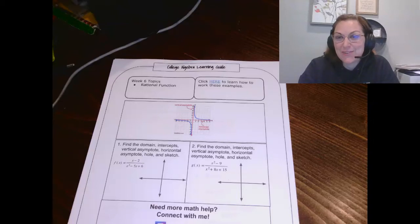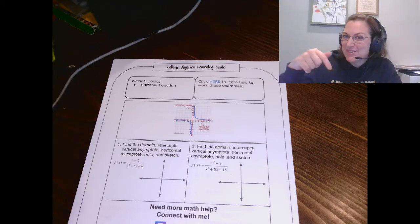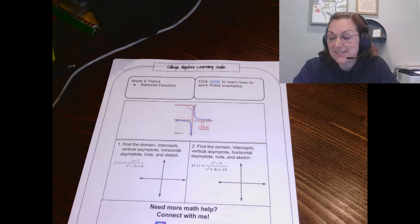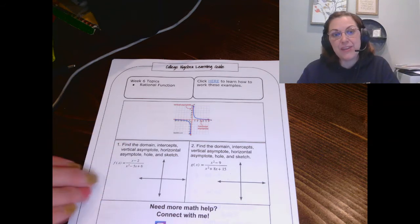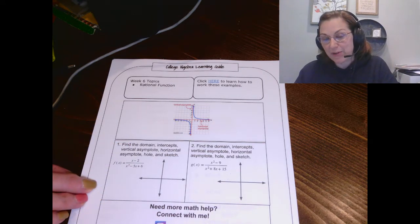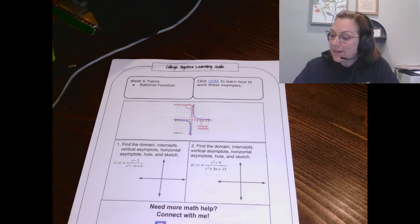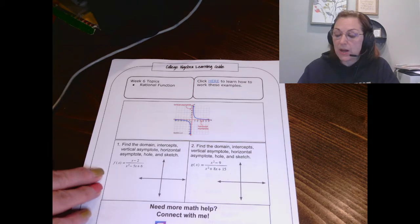This is part 2 of the Week 6 Learning Guide for College Algebra. We've been making some good progress so far. If you missed Part 1, check the description below. I have linked it for you so that you can access it. Also, if you want a hard copy of the document I'm working from, I've got the link below for you. Feel free to grab that and follow along. We are going to get started with some of the topics for this week.